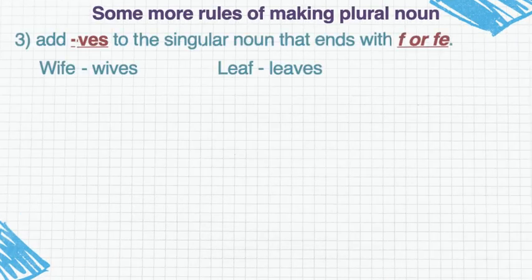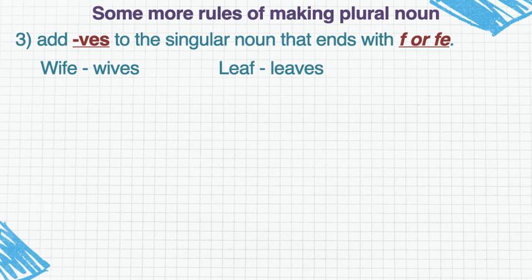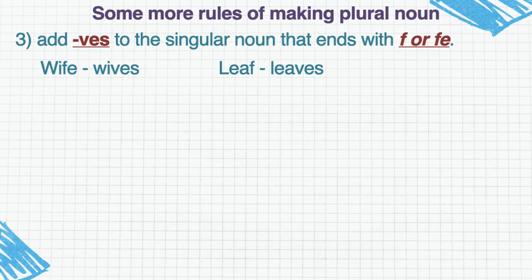Rule no. 3: Add VES to the singular noun that ends with F or FE. अगर कोई singular noun है जिसमें last में F आता है या FE आएगा, तो हम F और FE को हटा कर उसके जगह पर VES लगा देंगे. Example: wife — Y के पीछे FE आएगा तो wife का plural wives. Then leave — leave में last letter F है तो F को हटा कर VES कर देंगे, तो बन जाएगा leaves. Leave is the singular, leaves is the plural.